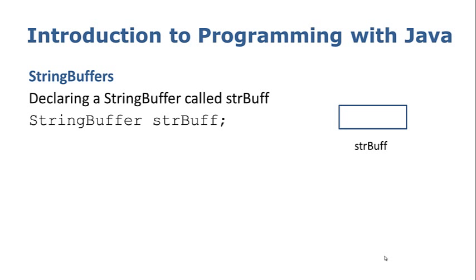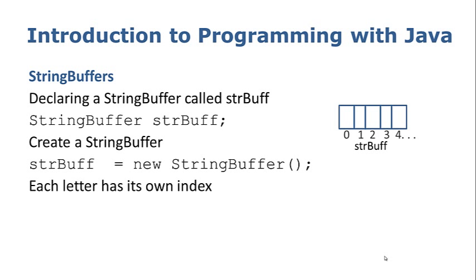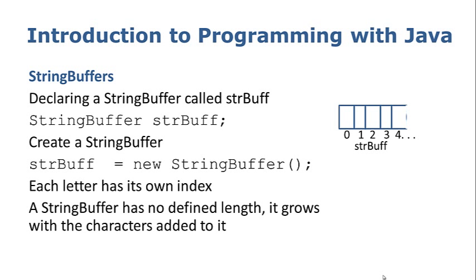We can add to it, we can remove from it, we can insert characters in particular places — and that's what a string doesn't allow us to do. So to create the string buffer, we say strbuff equals new StringBuffer. That sets our string buffer up the same way a string would be, with each space having its own index. What's important to note is that a string buffer has no defined length — it grows with the number of characters we add to it. Every time we add a character it gets bigger, which is why I've left it open on the end, because we don't really know how big the string buffer is going to be until we've finished using it.